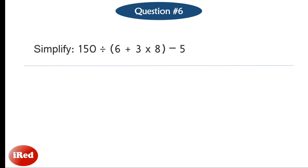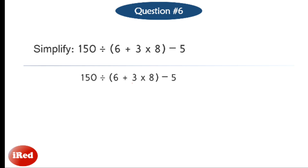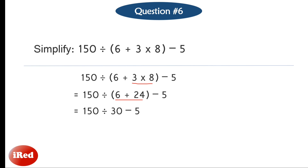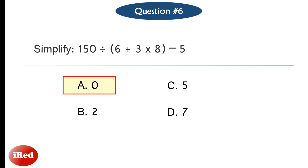Question 6: Again we follow the PEMDAS rule. Start with operations inside the parenthesis: 6 plus 3 times 8. Since there are two operations inside the parenthesis, we start with multiplication first before addition. 3 times 8 equals 24, then 6 plus 24 equals 30. So we have 150 divided by 30, minus 5. 150 divided by 30 equals 5. Then 5 minus 5 equals 0. The correct answer for number 6 is letter A, 0.